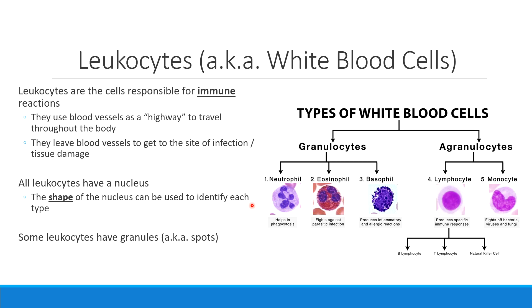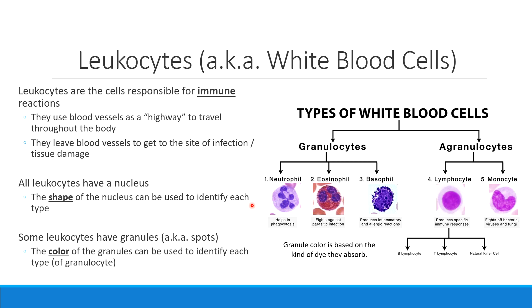Some of those white blood cells have what we call granules — granules are little spots. Only three of my leukocytes have these granules, but the color of those granules can help me to identify them. When we look at an eosinophil, this is going to have bright red granules. When we look at a basophil, that has dark blue granules. And in a neutrophil, the color of the granules is kind of neutral — in between red and blue — so it's like a light purple color. So as you're working on identifying the different types of cells, especially in lab, keep in mind that we have two ways to figure out what we're looking at: number one, what does the nucleus look like? Number two, what color is that cell?